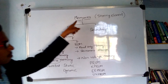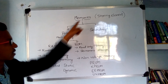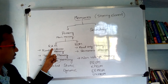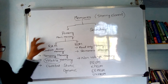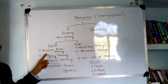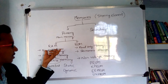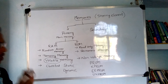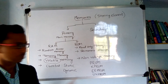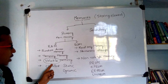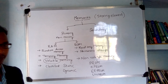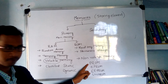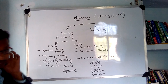To recap: memory is a storing element, classified into primary and secondary memory. Primary memory, also called main memory, is sub-classified into RAM and ROM. RAM is Random Access Memory — temporary and volatile. ROM is Read Only Memory — permanent and non-volatile. RAM is further classified into Static and Dynamic RAM, while ROM is classified into PROM, EPROM, EEPROM, and UV-PROM.